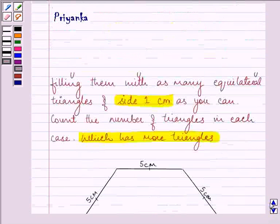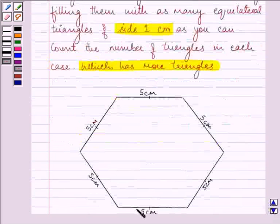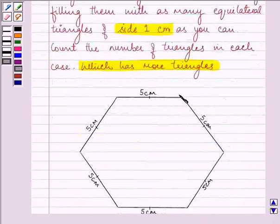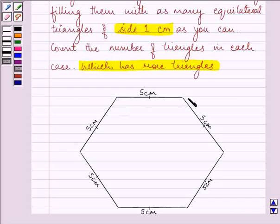Now, let us first fill up this Rangoli. All the sides of this hexagonal shaped Rangoli are 5 cm and we need to draw equilateral triangles of side 1 cm each. So, what we need to do is,